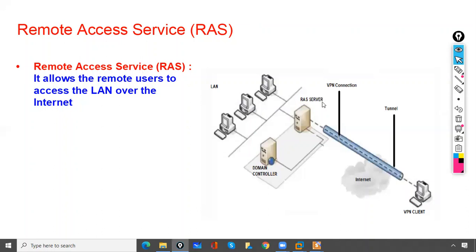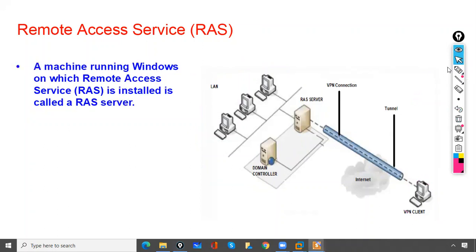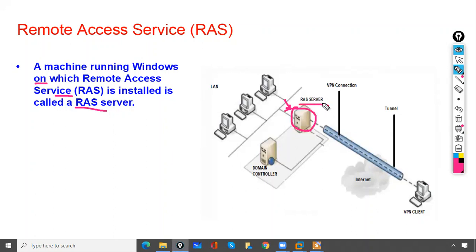RAS — Remote Access Service — allows remote users to access the LAN over the internet. If you want to access your LAN over the internet, you will use this RAS server. A machine running Windows on which RAS Remote Access Service is installed is called a RAS server.